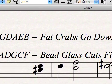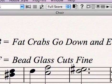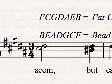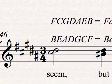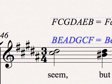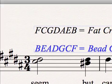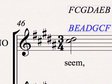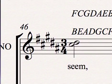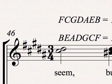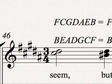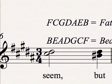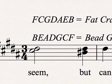Now an easy way to remember that is "fat crabs go down and eat bugs," and an easy way to remember the order of flats is "B glass cuts fine." So if I had five flats, that's actually telling me that I'm in the key of D flat, and the five flats would be B, E, A, D, and G.